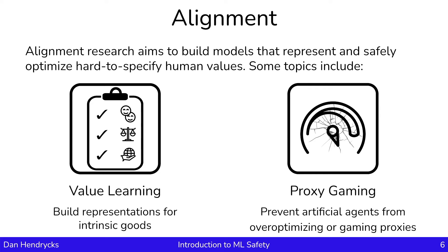We're treating, in this course, alignment as a subset of safety. This is because people could maliciously align a model, and that wouldn't make us safe. So, there's more to safety than just alignment.